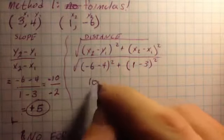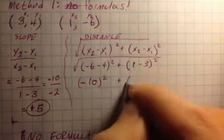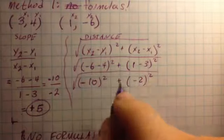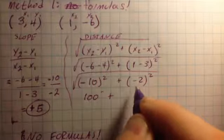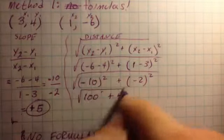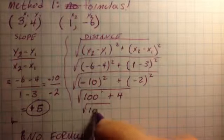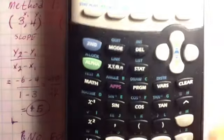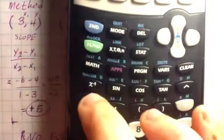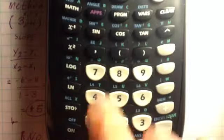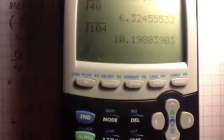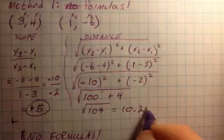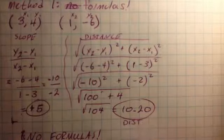Negative 6 minus 4 is negative 10 squared, plus 1 minus 3 is negative 2 squared, all under a square root. Negative 10 squared is 100, plus negative 2 squared is 4, so the square root of 104. Let me grab my calculator. Square root of 104 and I get 10.198, let's call that 10.20, and there's my distance.